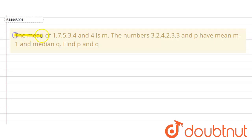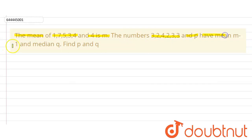The mean of 1, 7, 5, 3, 4 and 4 is m, and the numbers 3, 2, 4, 2, 3, 3 and p have mean m minus 1 and the median q.